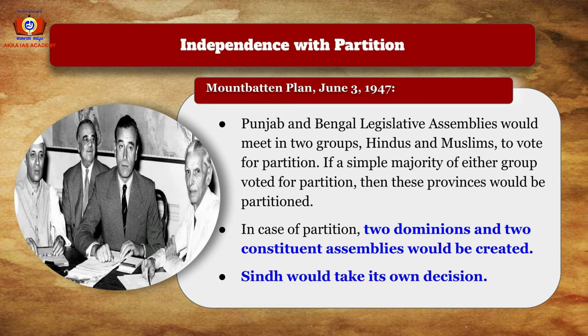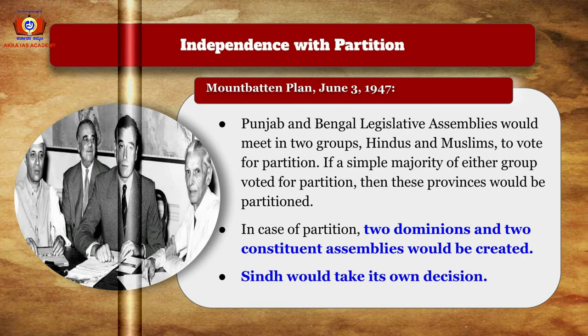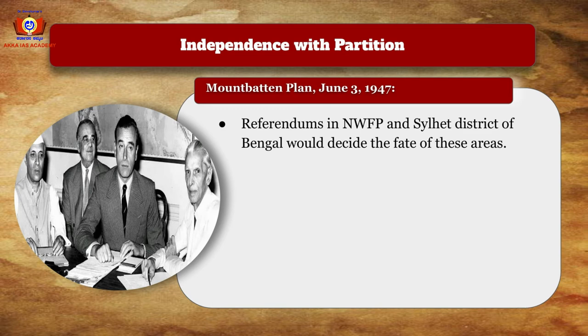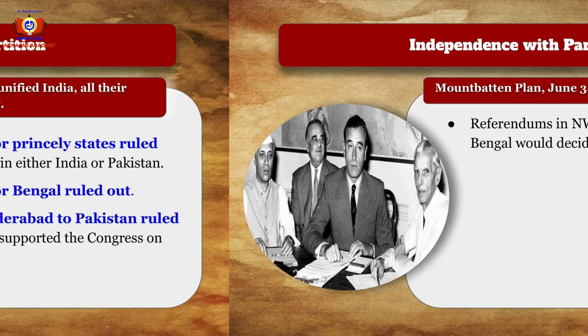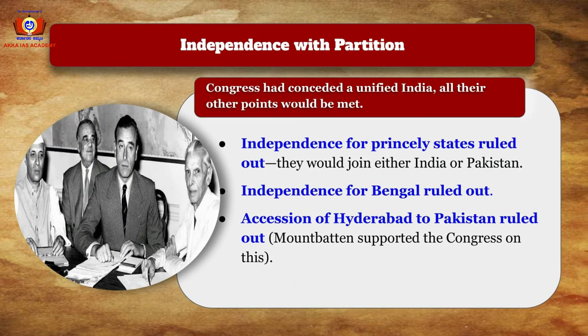In case of partition, two dominions and two constituent assemblies would be created. Sindh would take its own decision, and referendums in the North-West Frontier Province and the Sylhet district of Bengal would decide the fate of those areas. Independence for princely states was ruled out — they would join either India or Pakistan. Independence for Bengal was ruled out, and accession of Hyderabad to Pakistan was also ruled out, with Mountbatten supporting the Congress on this point.